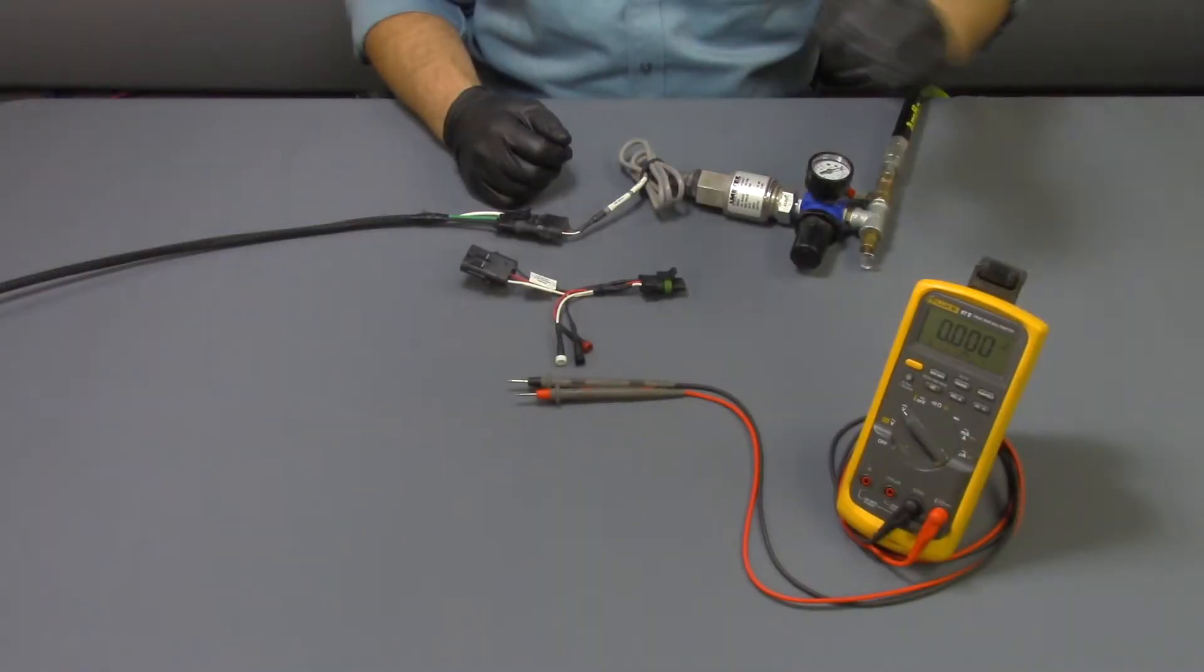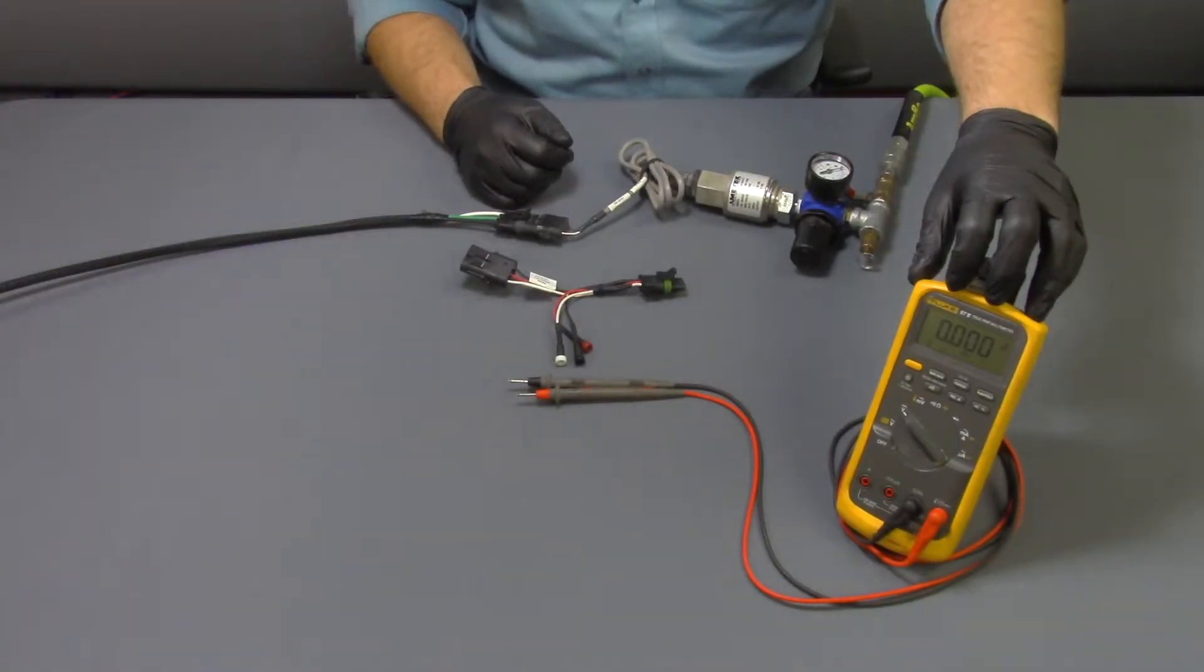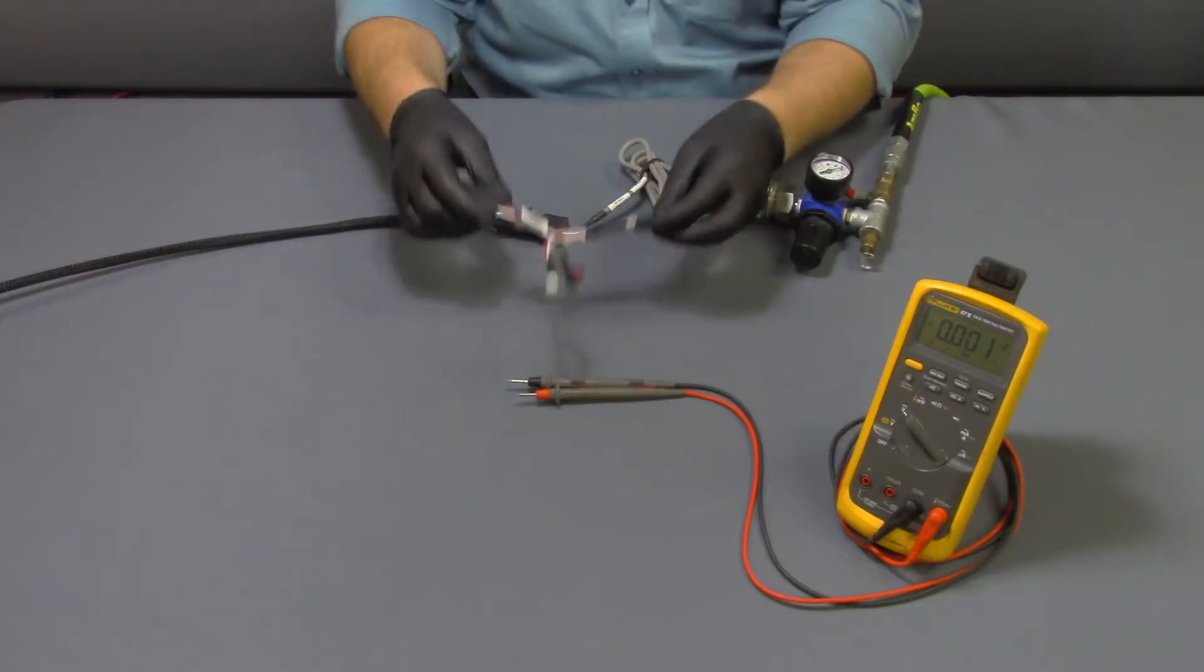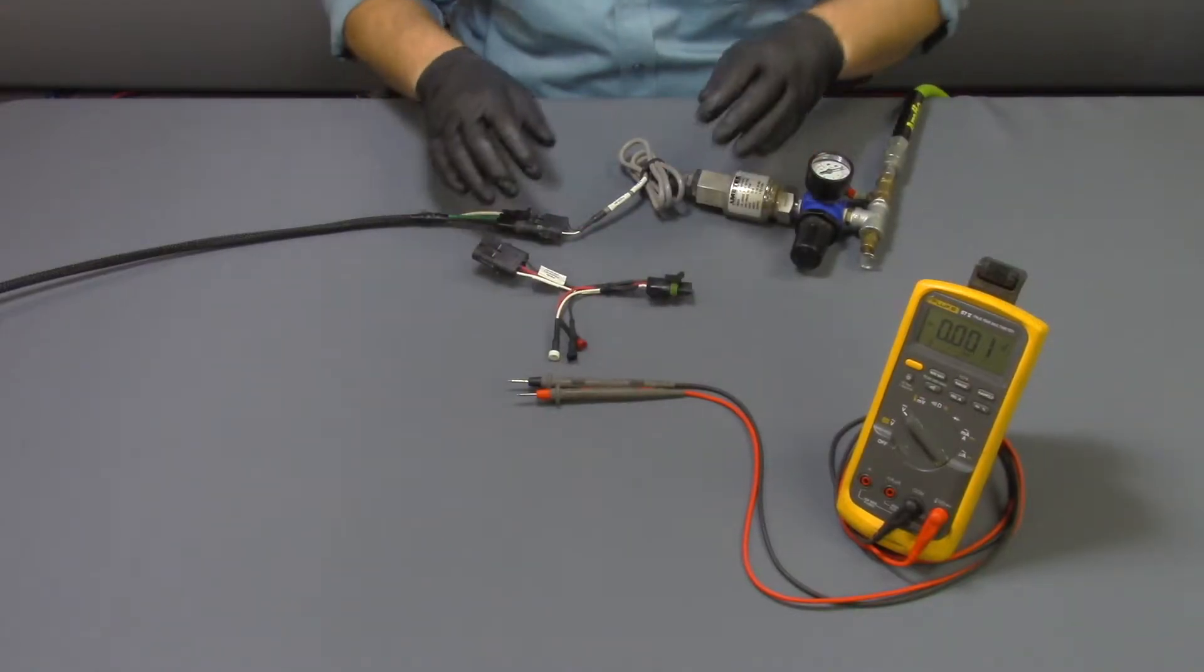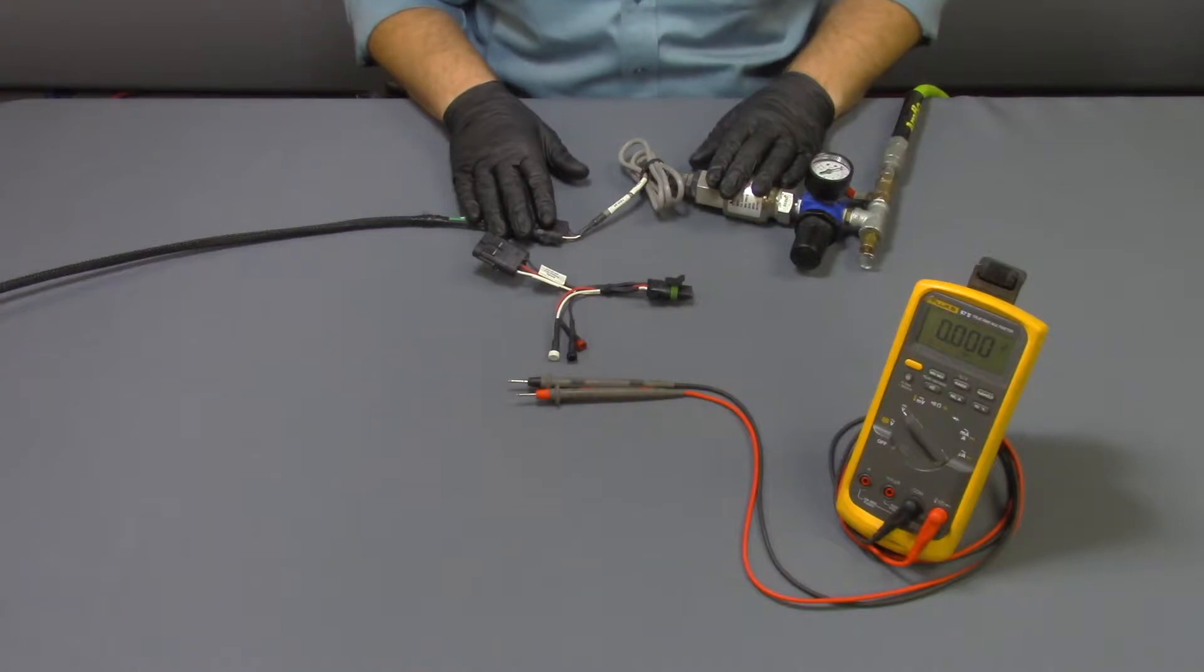To perform this test we'll need a digital multimeter set to DC volts. We'll need this breakout harness and then your system pressure sensor on your boom.